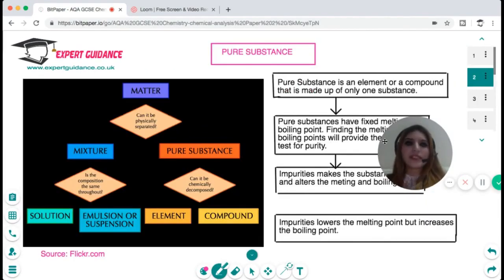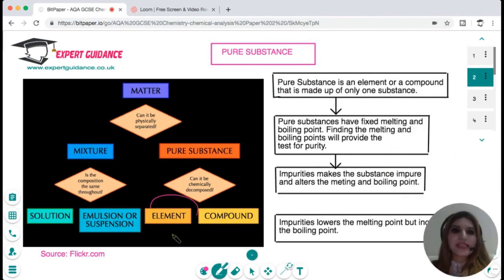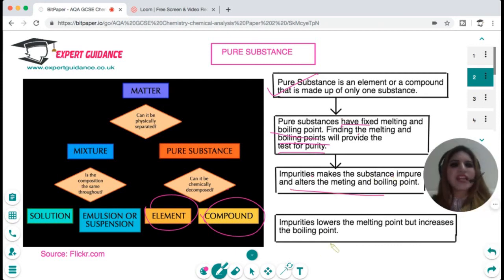What is a pure substance? A pure substance is an element or a compound that is made up of only one substance. Pure substances will have a fixed melting and boiling point, and finding the melting and boiling point provides the test for purity. Impurities make the substance impure and alter the melting and boiling point. Generally, impurities lower the melting point but increase the boiling point.